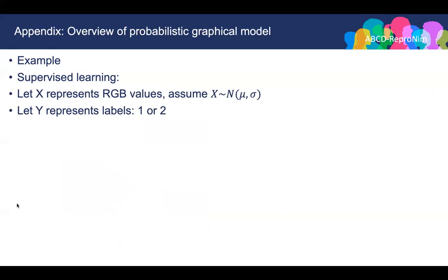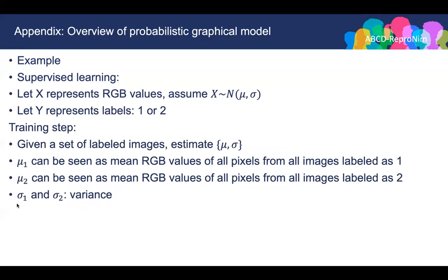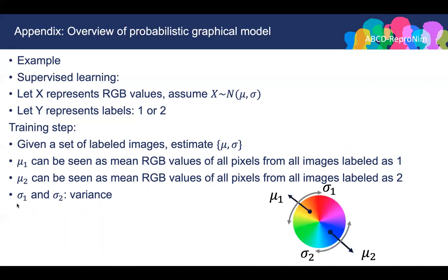We use x to denote the observed RGB values and y to denote unknown labels. The RGB values are assumed to follow a normal distribution. For unknown labels, we have 1 and 2 to denote object and background. In the training step, based on the labeled training images, we want to estimate mu and sigma for objects and background. Mu 1 can be seen as the mean RGB values of all pixels labeled as 1 in the training set, and mu 2 as the mean RGB values of all pixels labeled as 2. Sigma 1 and sigma 2 control the variance.